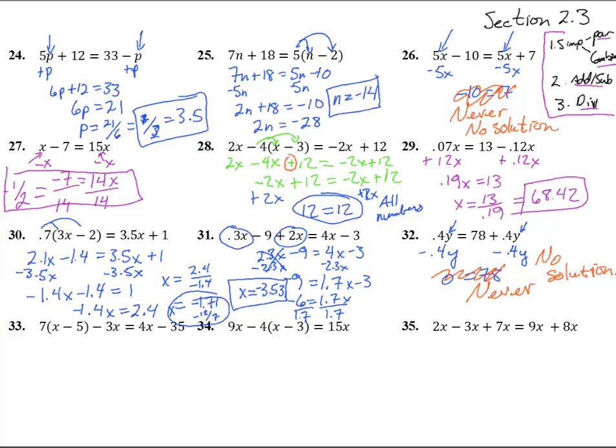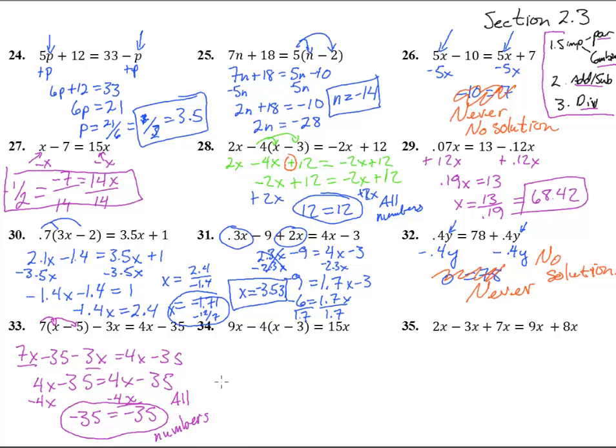Number 33. This looks like kind of a big one. We first get rid of the parentheses. So we have 7x minus 35 minus 3x equals 4x minus 35. How many x's do we have over here? We have 4x. 4x minus 35 equals 4x minus 35. Something fishy is going on. Let's keep going. Try to get the x's together by getting rid of this one over here. We have to do it to both sides, and we're ending up with negative 35 equals negative 35, and this always happens. No matter what x equals, negative 35 is equal to negative 35. So the answer is all numbers.